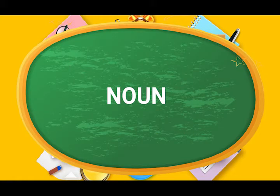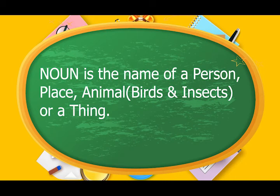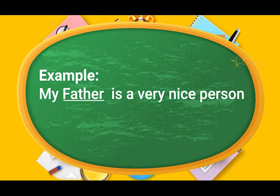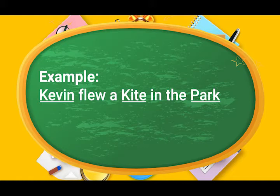Noun. Everything has a name. These names help us to identify people, place, animal or a thing. So, noun is the name of a person, place, animal or a thing. My father is a very nice person — the noun in this sentence is 'father'. Kevin flew a kite in the park. In this sentence, you have 3 nouns: Kevin, kite and park. Kevin is a person, kite is a thing, and park is a place, which is also a noun.